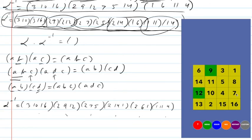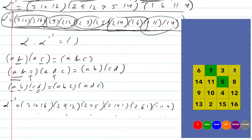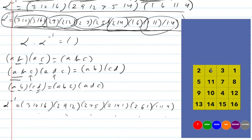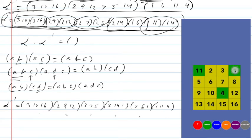The thing in position 2 goes to position 7, goes to position 5. Then 2 goes to 14. Then 2 goes to 6, goes to 1. And finally, 1 goes to 11, goes to 4.